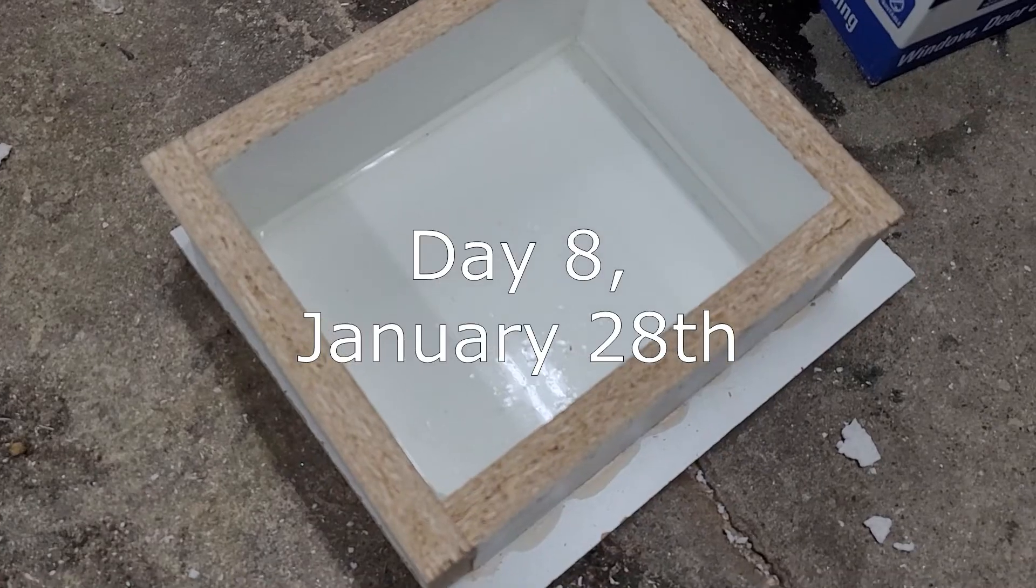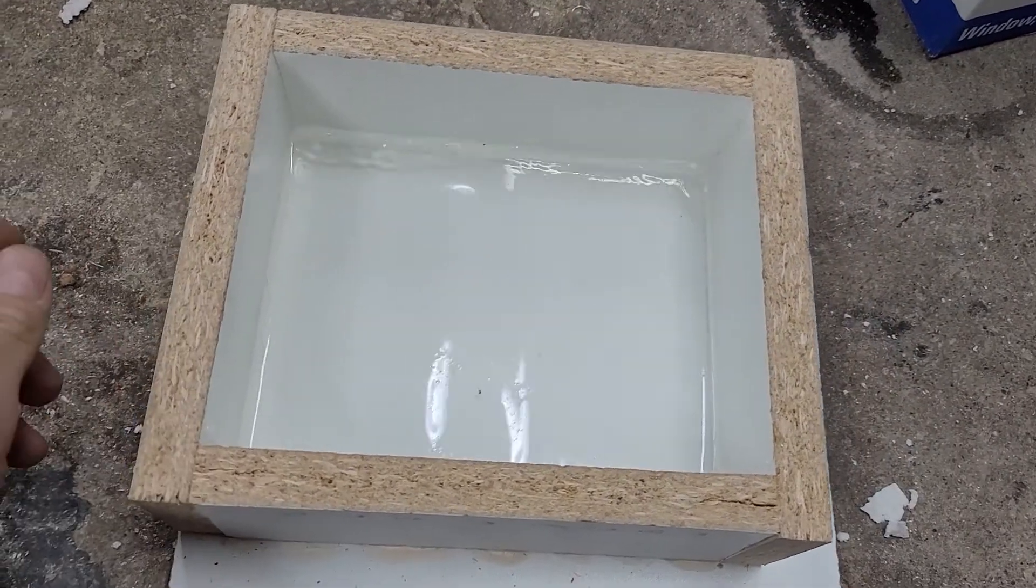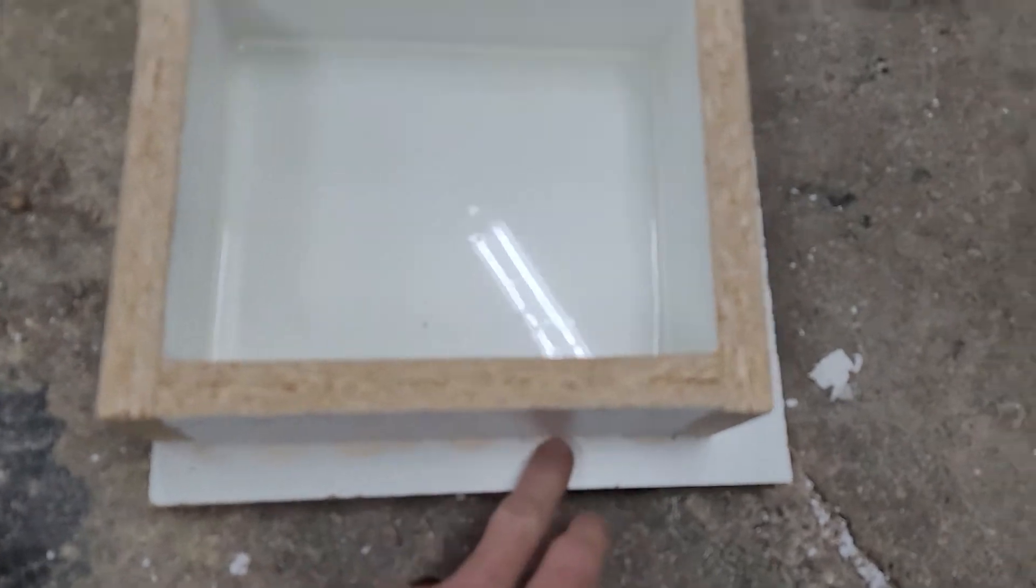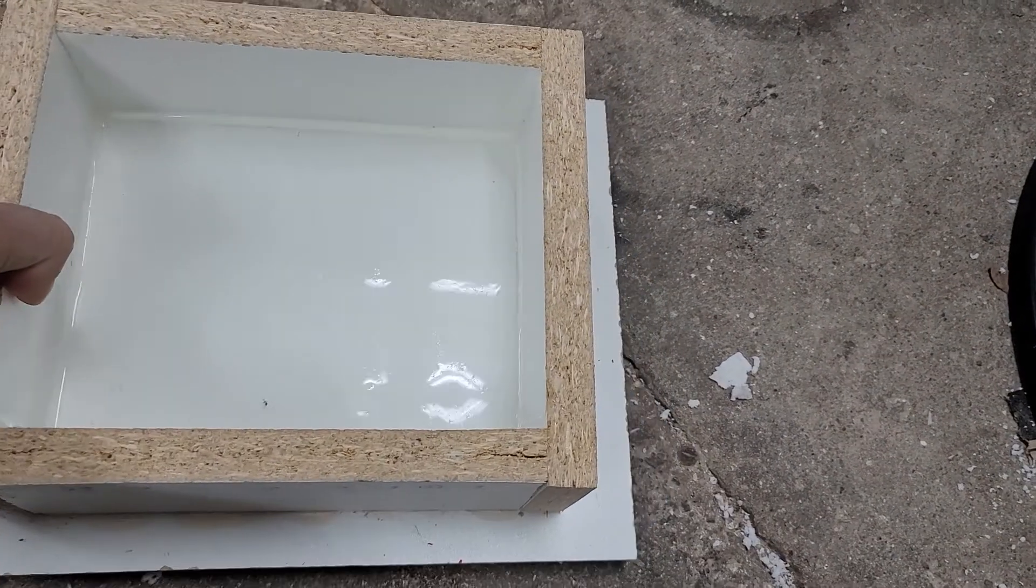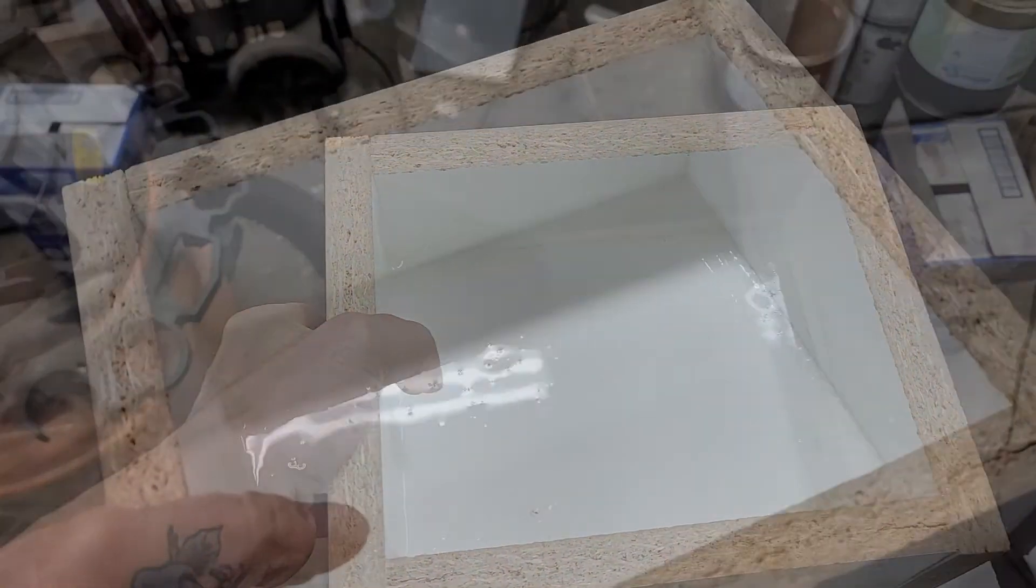So it is January 28th. I've had this in here for about a week and a half. As you can see, the water is still in there. That's glue on the side right here. It actually hasn't leaked. It's held water. I haven't had to add any or nothing all week, so I'm going to dump this water out now and take a look and see what it looks like inside.